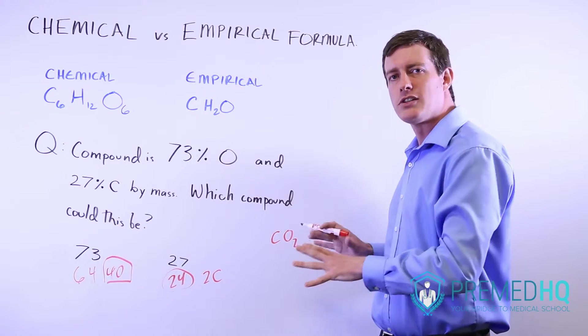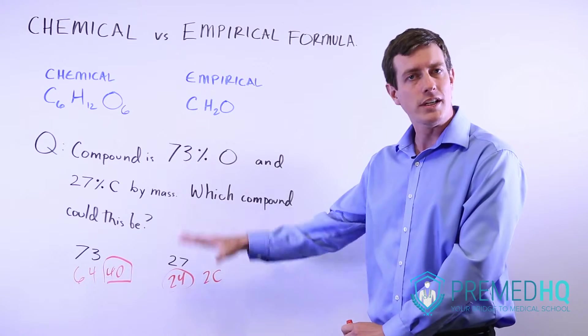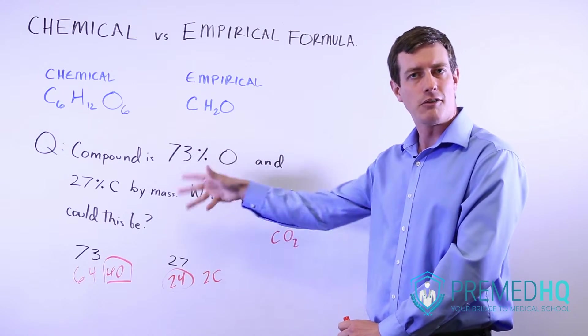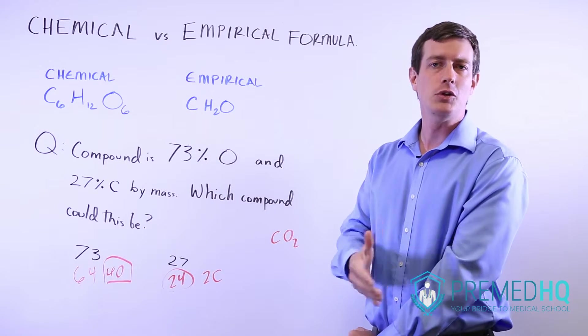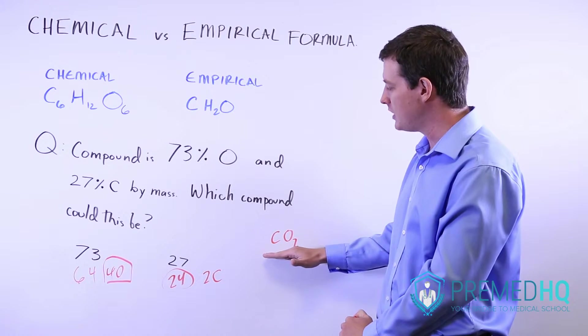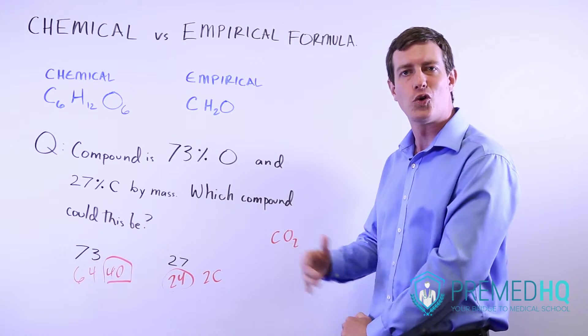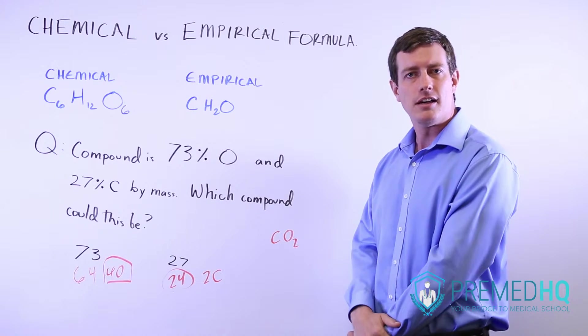The way that you'll answer a question like this once you find the empirical formula is that it will be the only answer choice listed out of your multiple choice answers, or they will tell you the mass of the compound and you'll figure out which compound - whether it's CO2, C2O4, and so on - has the mass you're looking for.